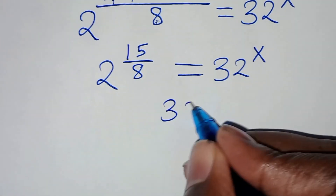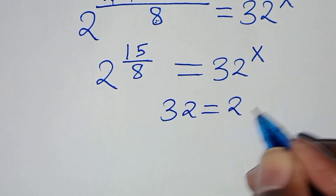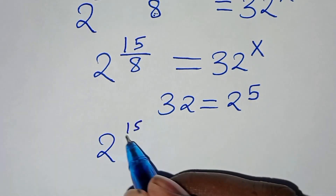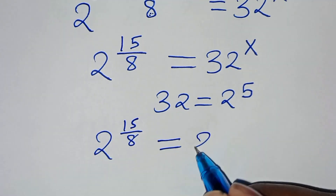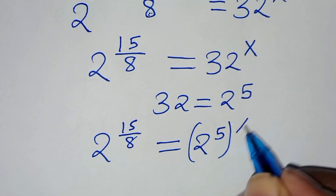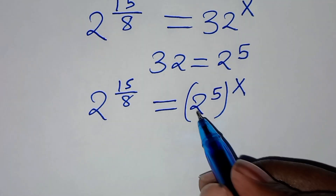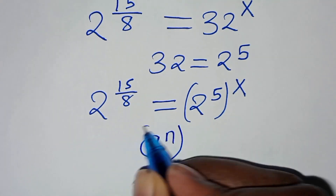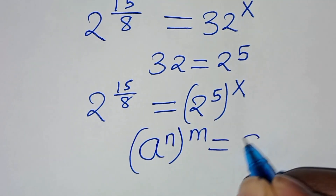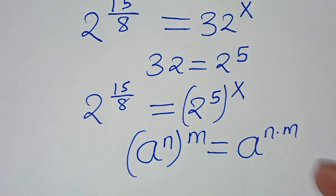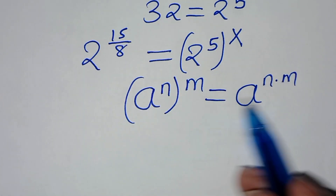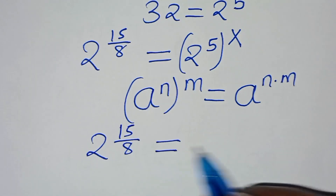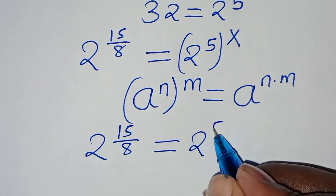The next step: we can express 32 as 2 to the power of 5. Substituting, we have 2 to the power of 15 over 8, equal to 2 to the power of 5 raised to the power of x. Now 2 to the power of 5 raised to the power of x is in the form of a to the power of n raised to the power of m, which can be expressed as a to the power of n times m. Applying this property, we have 2 to the power of 15 over 8 equal to 2 to the power of 5x.